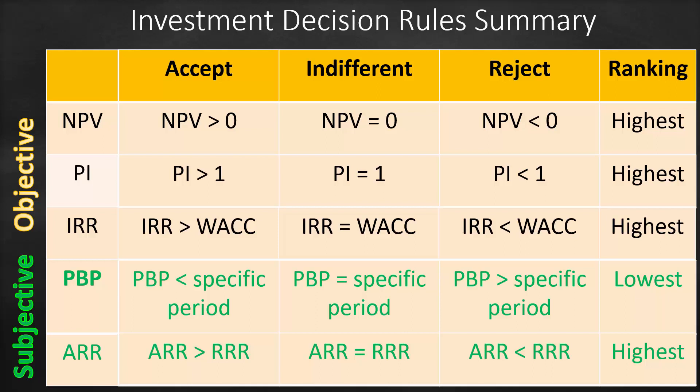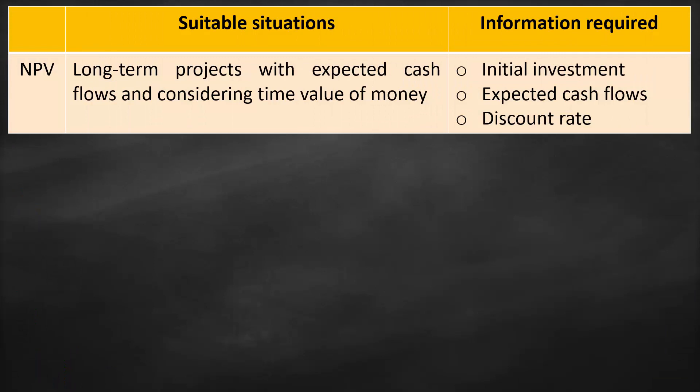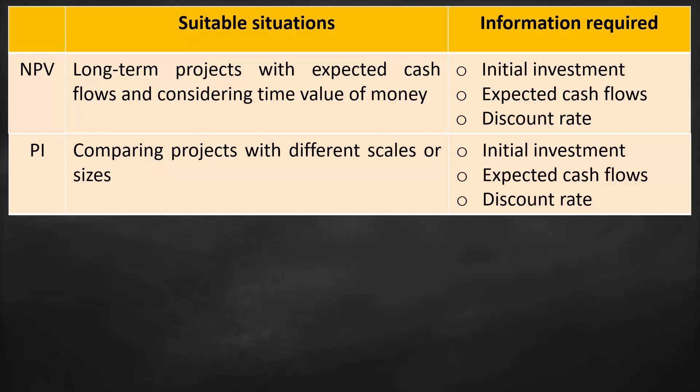Although we calculate all investment decision rules in real life, our superior measure is net present value. For NPV, we use it for long-term projects with expected cash flows considering time value of money. The required information is initial investment, expected future cash flows, and discount rate. Profitability Index is used when comparing projects with different scales or sizes, and requires the same information as NPV.